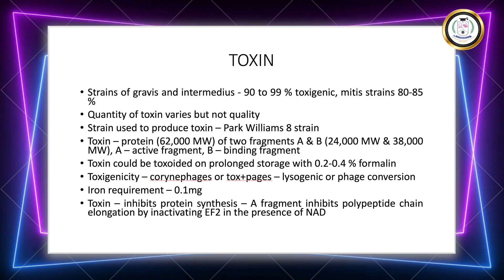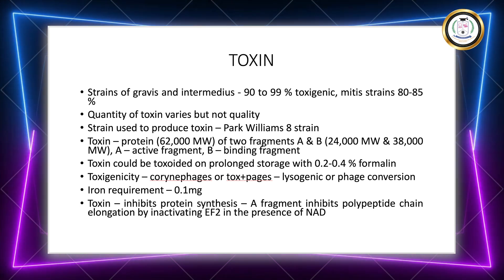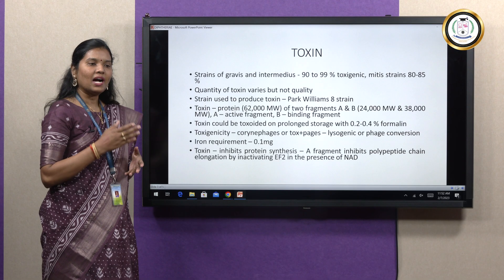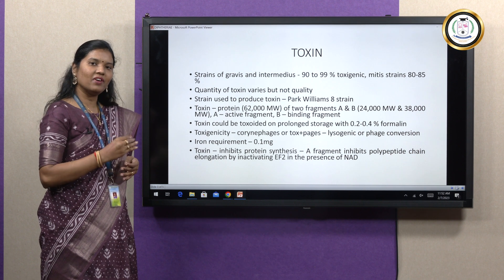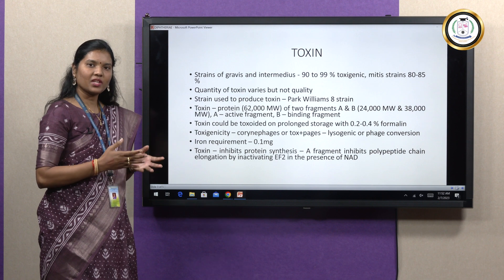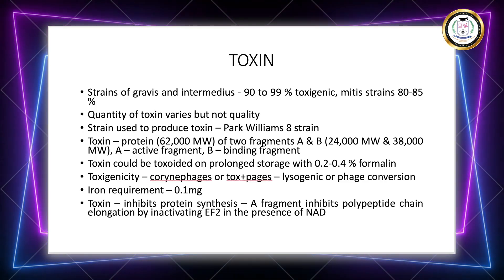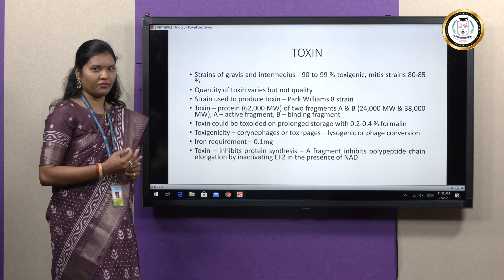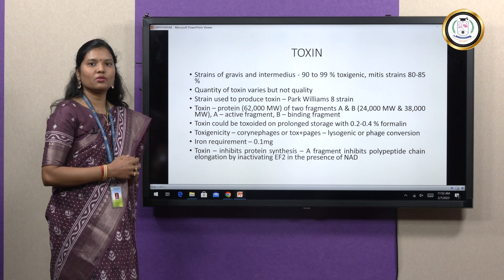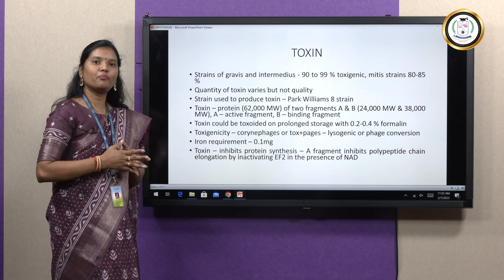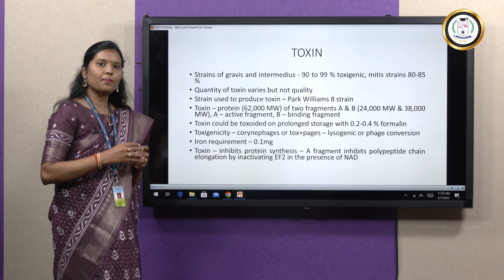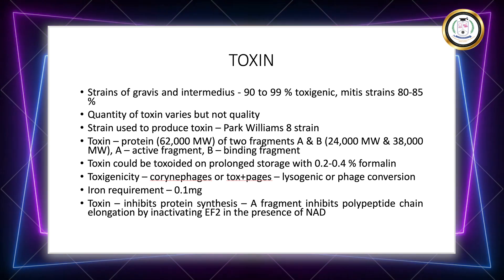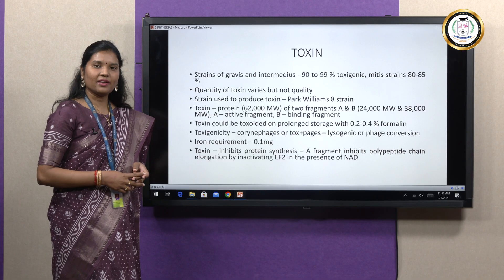Even non-toxigenic strains of Corynebacterium could be rendered toxigenic by infecting them with beta phages or tox-plus phages. Until the bacilli is cured of the phages using phage antiserum, the bacilli will remain toxic. Another important feature required for toxin production is iron: 0.1 mg of iron enhances toxin production, while 0.5 mg of iron inhibits it. The mode of action of the toxin — specifically Fragment A — is the inhibition of protein synthesis by inactivating elongation factor 2 (EF2) in the presence of NAD (nicotinamide adenine dinucleotide).